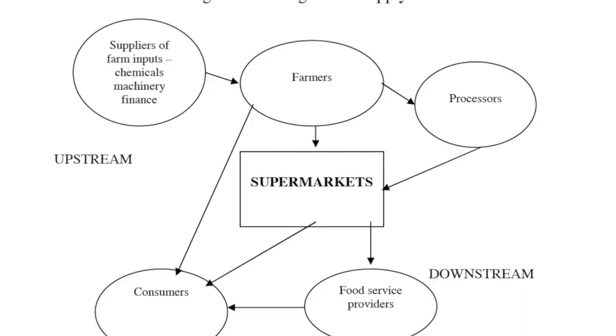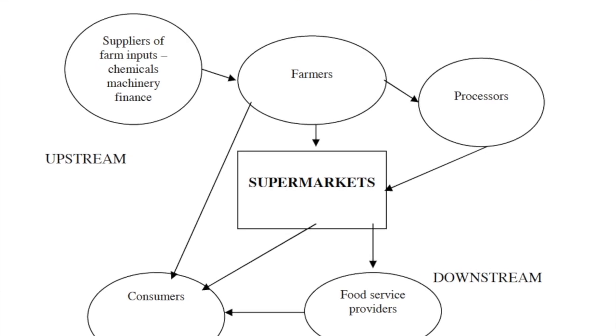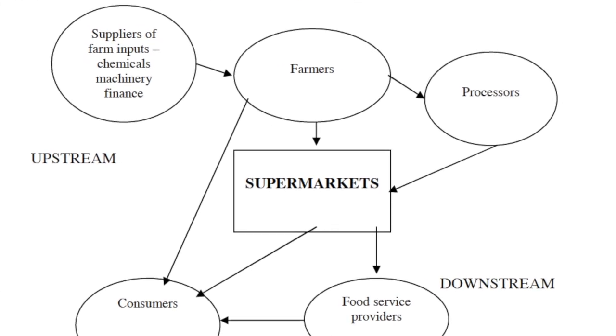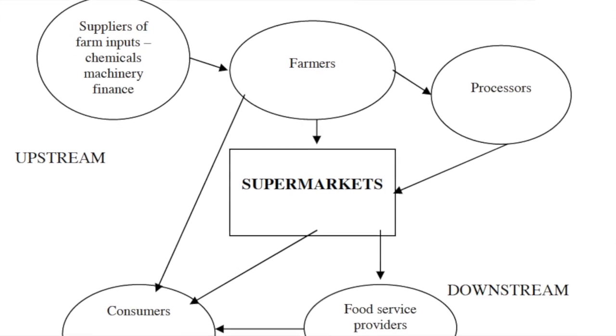What are the components of a food supply chain? In the graphic that you see, there are different components and actors in a food supply chain in the upstream and in the downstream.